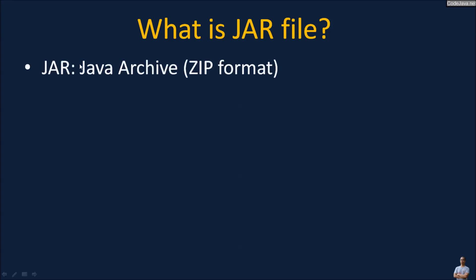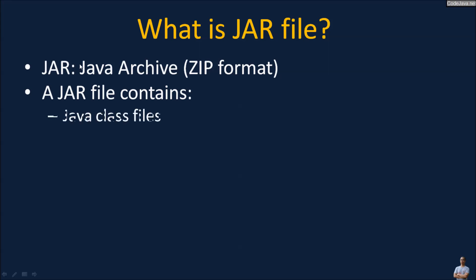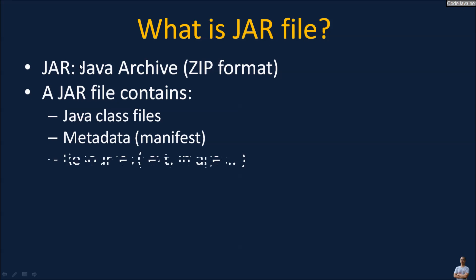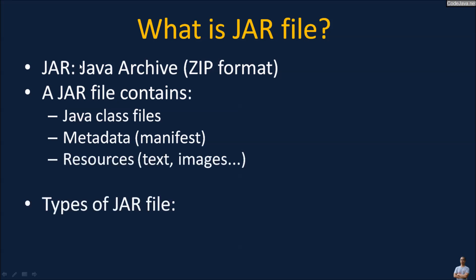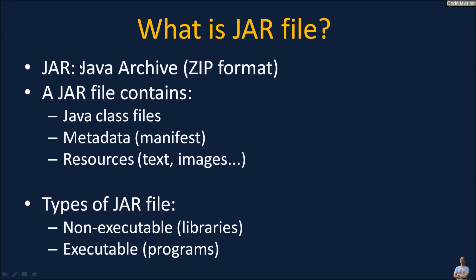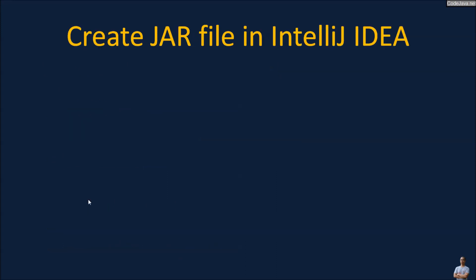In Java, JAR stands for Java Archive. It is in a standard ZIP format. JAR is used to distribute Java libraries, programs, and applications. A JAR file contains Java class files, metadata or manifest information, and resources like text or images. There are two main types of JAR files: non-executable for libraries and executable for programs.